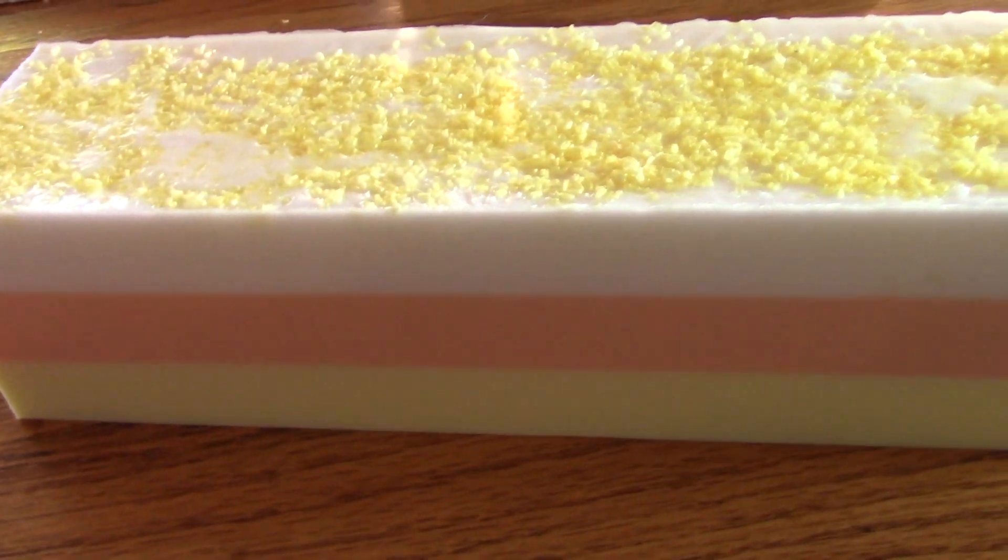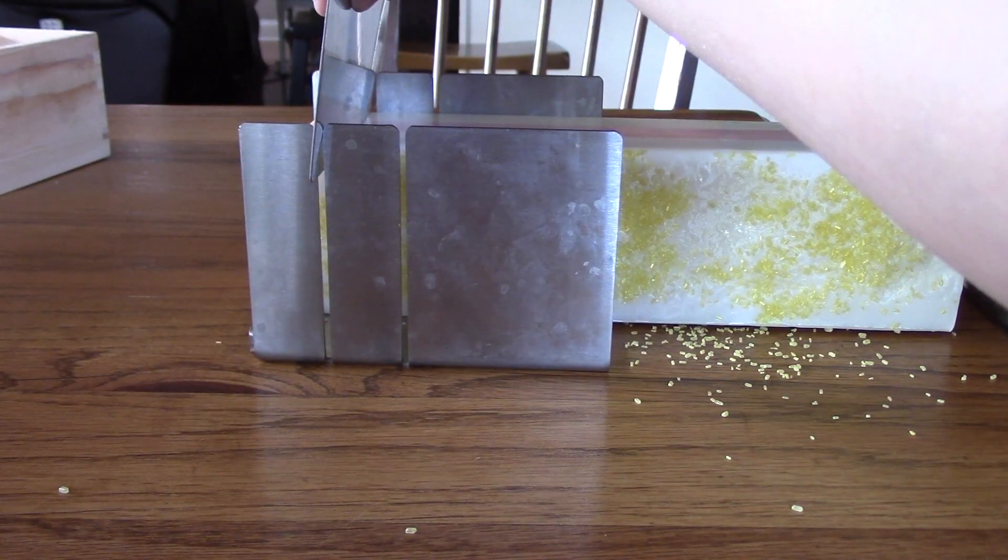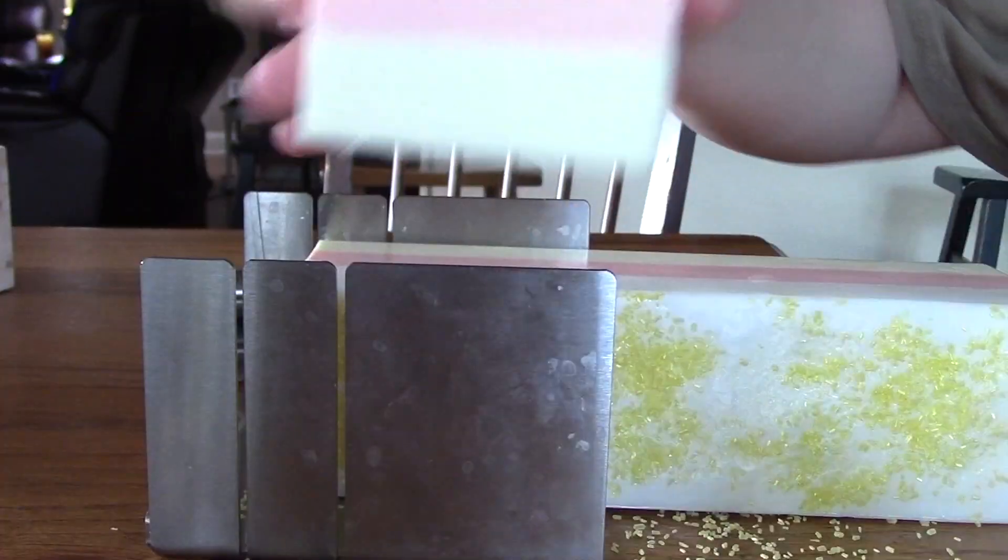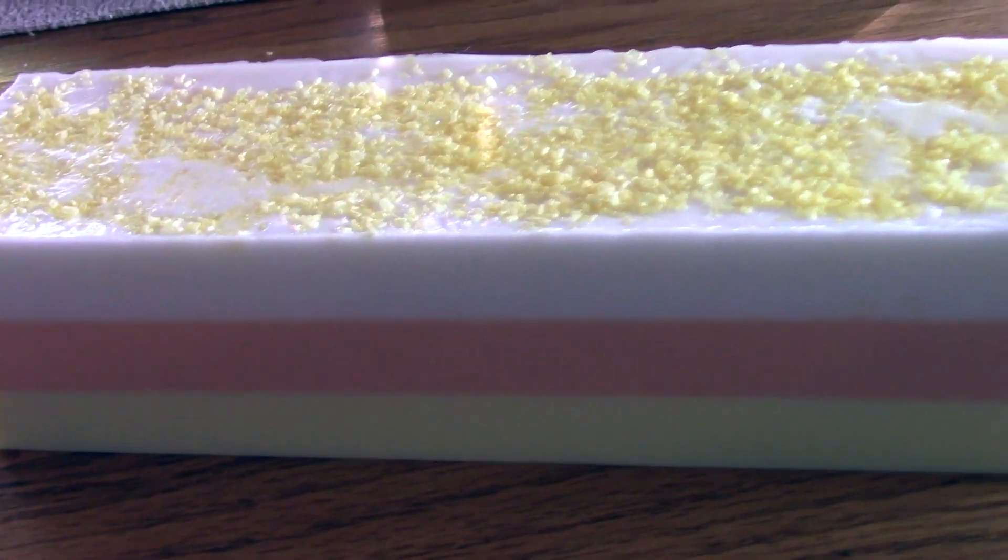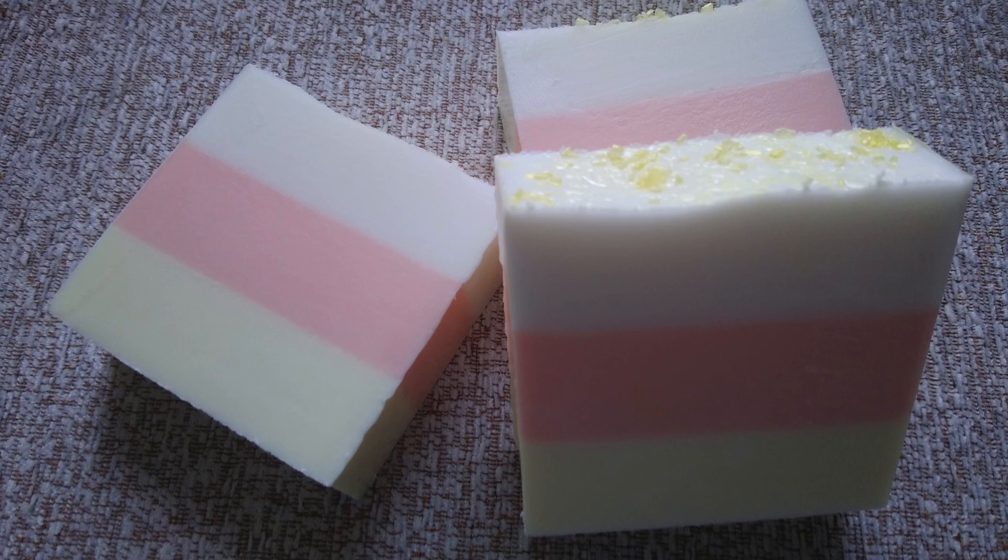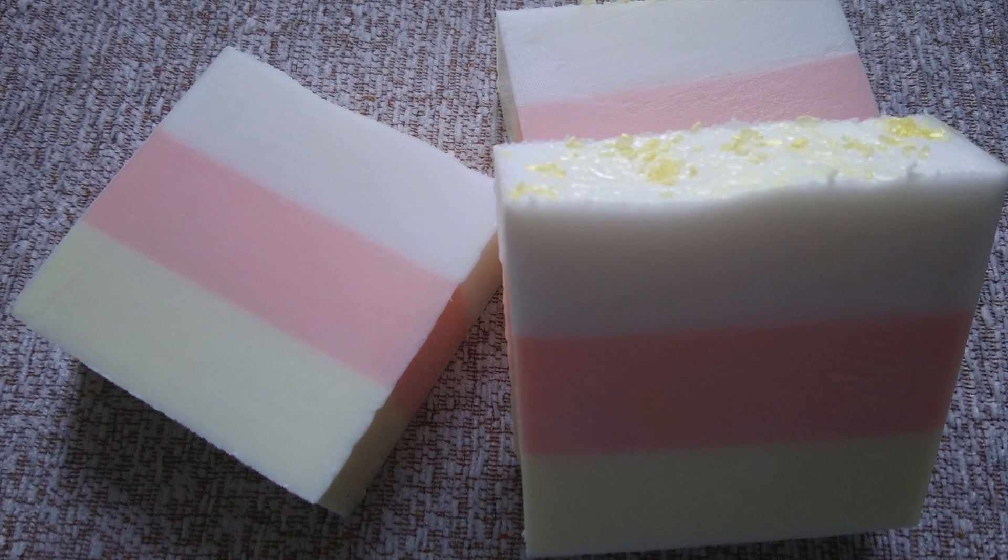I'm using our small miter box and straight cutter to press firmly down on the soap to create even bars. And now we have some really cute candy corn melt and pour soaps that were super easy to make and make great gifts for the fall season.